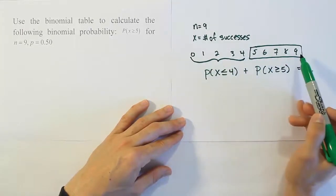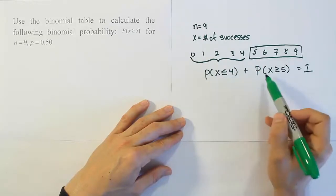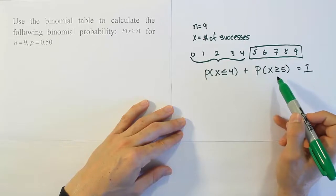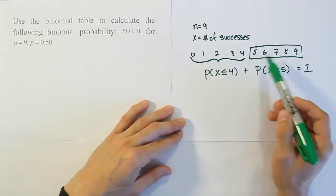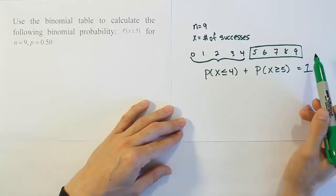Because this is all the possibilities basically. Either the number of successes you have is 4 or less, or it's 5 or more. There's no other cases. There's no way you could be outside of either of these two sets. If you're not in this set, you have to be in that one. You can't be outside of both sets at the same time.